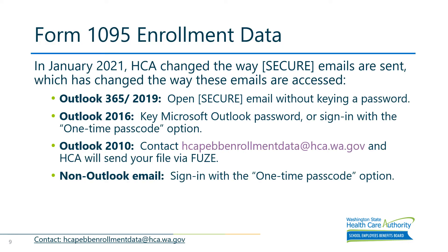There is an update with Form 1095 enrollment data. At the beginning of January, HCA changed the way secure emails are sent to SEB organizations, which also changed how these emails are accessed. Users of Outlook 365 or 2019 can open the secure email without entering a password. Users with Outlook 2016 must key in their Microsoft Outlook password or sign in with the one-time passcode option. Users on Outlook 2010 should contact the provided email address and HCA will send the file via FUSE. Non-Outlook email users should sign in with the one-time passcode option. For 2020, correction files will be provided on a monthly schedule if enrollment data from 2020 or earlier is updated.